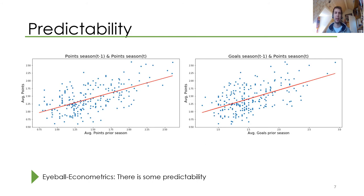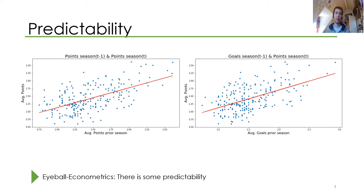There is some predictability in the data. These two scatter plots show the average points in the prior season and the average goals in the prior season, in combination with — on the y-axis — the average points in the season under consideration. So there's a tendency that if you scored lots of goals and got lots of points in the previous season, you're also more likely to get a lot of points in the following season. You get three points for a win, one point for a draw, and no points for a loss — so essentially, getting more points means more wins.